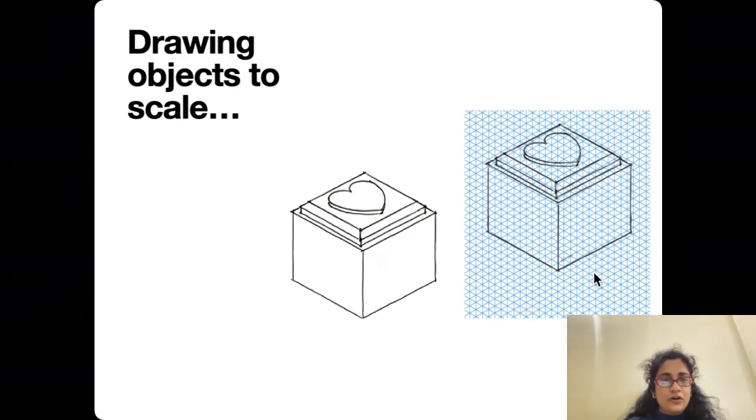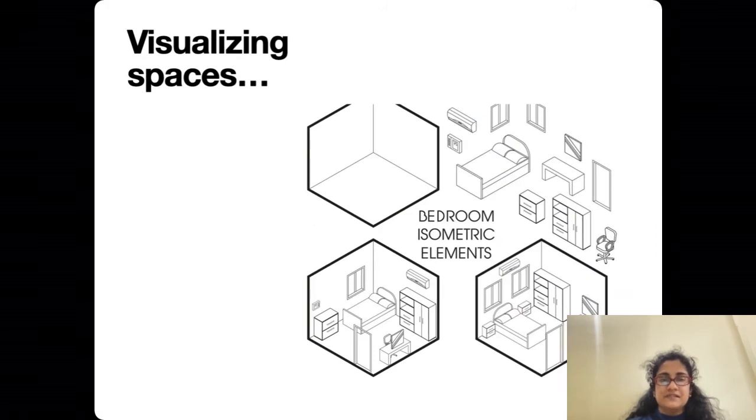Let's see how we can draw something using an isometric grid. For example, if you want to draw objects to scale, you will realize that when you use an isometric grid, every side will be shown accurately. The same goes for drawing out spaces. If you have something as a plan, something that is flat, it is possible to project it vertically accurately using an isometric drawing to actually show people how the inside of the place looks or how the experience and the arrangement is in three dimensions. These are just a couple of examples, but today let us take a couple of back steps and figure out how we can draw things isometrically.